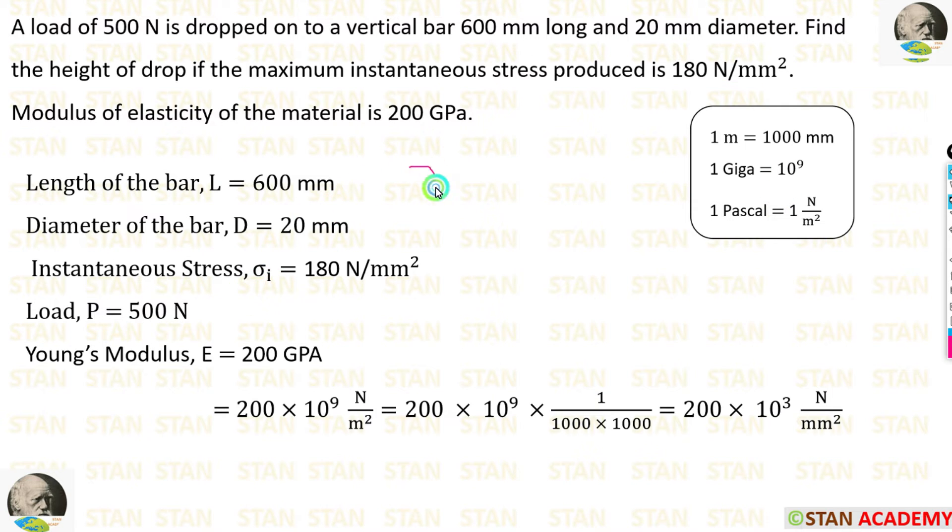In this question, most of the values are given in mm. Here only we are having meter square. So let us convert meter square into mm square. We know that 1 meter is equal to 1000 mm. Here we are having meter square. So 1 divided by 1000 into 1000. Finally, we are getting 200 into 10 power 3 Newton per mm square.